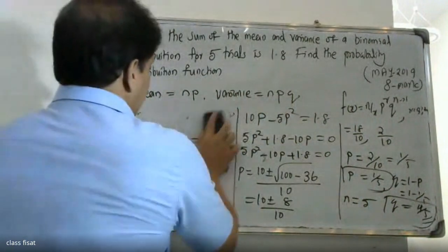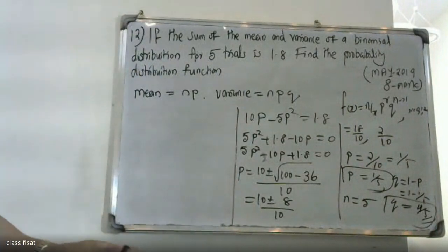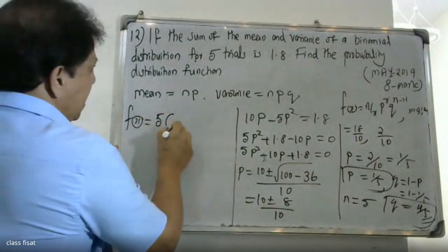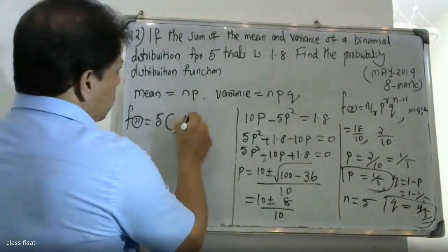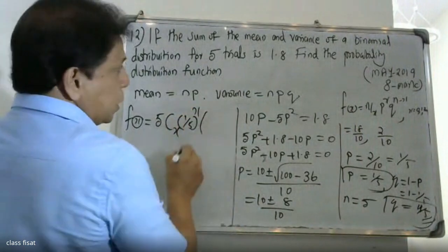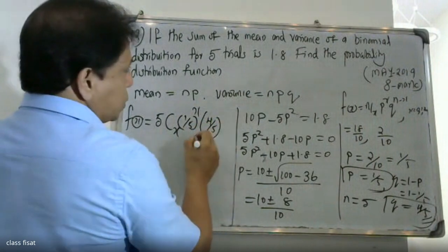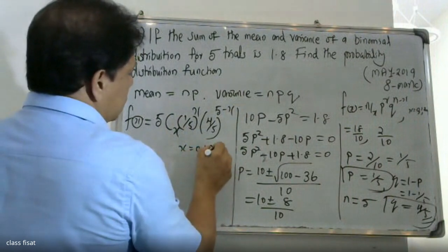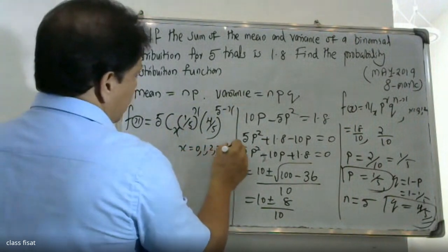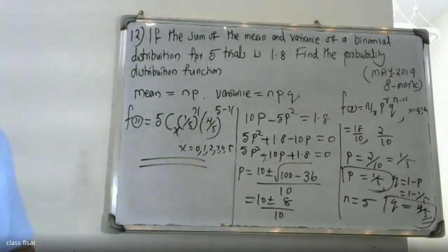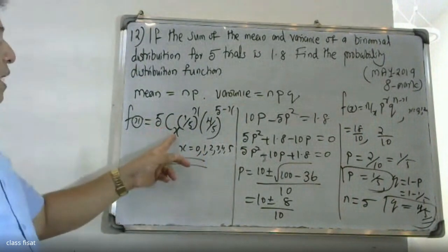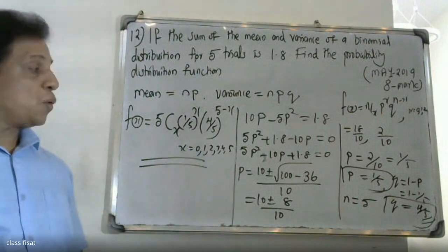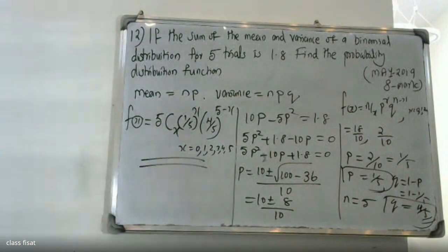We can write the distribution function. Therefore, the distribution function is f(x) = 5Cx * (1/5)^x * (4/5)^(5-x), for x = 0, 1, 2, 3, 4, 5. The final answer is f(x) = 5Cx * (1/5)^x * (4/5)^(5-x) for x = 0, 1, 2, 3, 4. This is the final answer.